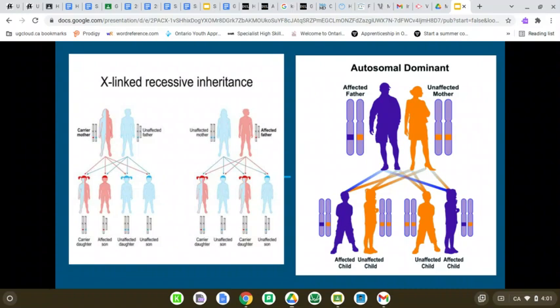This is the reason colorblindness is so much more common in males than females. Since females have two X chromosomes, they would need both a carrier mother and affected father in order for it to be expressed, while males have only one X chromosome. So if the mother passes on the affected X chromosome, the offspring will be colorblind.